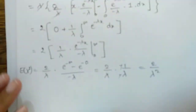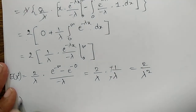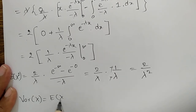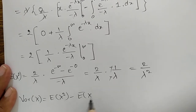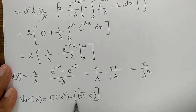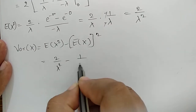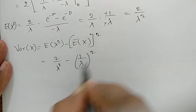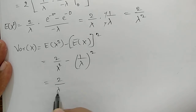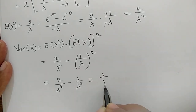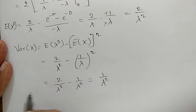Now computing the variance: Var(X) = E[X²] − (E[X])² = 2/λ² − (1/λ)² = 2/λ² − 1/λ² = 1/λ². So the variance of the exponential distribution is 1/λ².